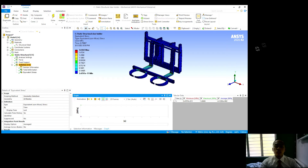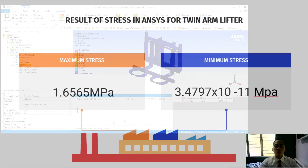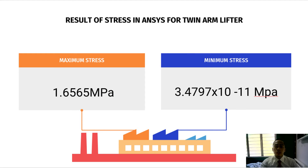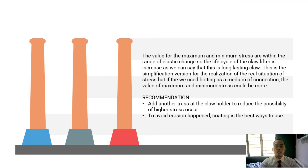For the twin arm lifter, since we apply the load at the claw, we chose the claw surface to simulate in ANSYS. We obtained a maximum stress of 1.6565 MPa and a minimum stress of 3.4797×10⁻¹¹ MPa. The values for maximum and minimum stress are within the elastic range, so the life cycle of the claw lifter is increased — we can say this is a long-lasting claw. This is a simplified version for the realization of real stress conditions, but if bolting is used as a medium of connection, the stress values could be higher.